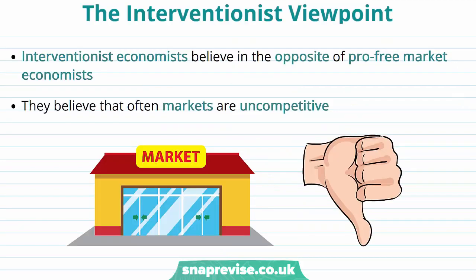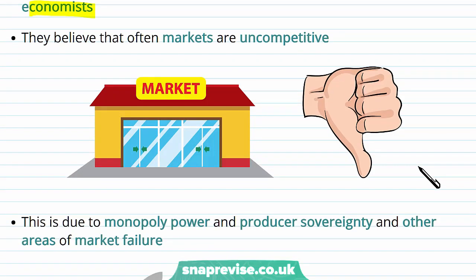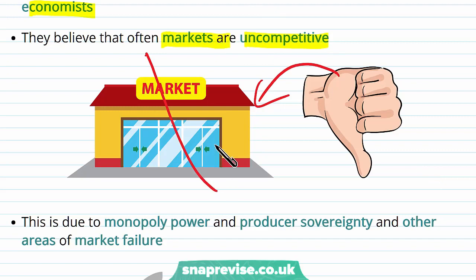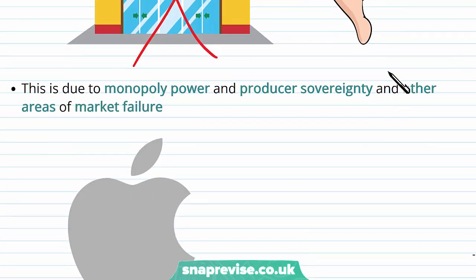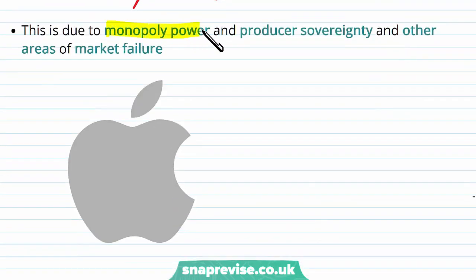Now let's think about the other side of the coin — interventionists. Interventionist economists believe in the opposite of pro-free market economists. They believe that markets are uncompetitive and, as they are uncompetitive, they are inherently bad. This is due to the development of monopoly power, producer sovereignty, and other areas of market failure which interventionists view as problematic.